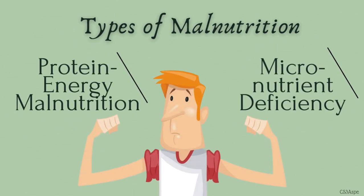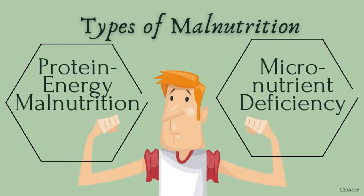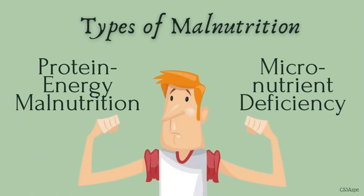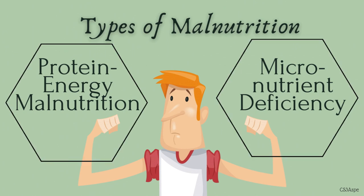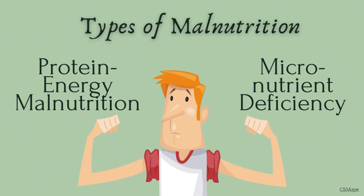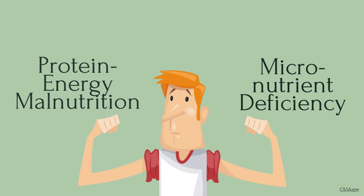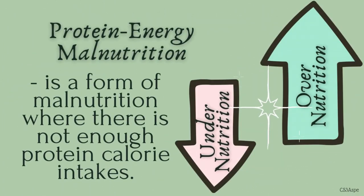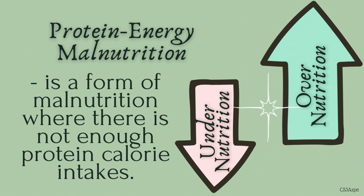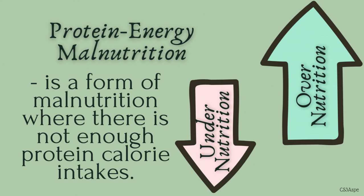There are two types of malnutrition: protein energy malnutrition and micronutrient deficiency. Protein energy malnutrition is a form of malnutrition where there is not enough protein or calorie intake. It could be undernutrition or overnutrition.